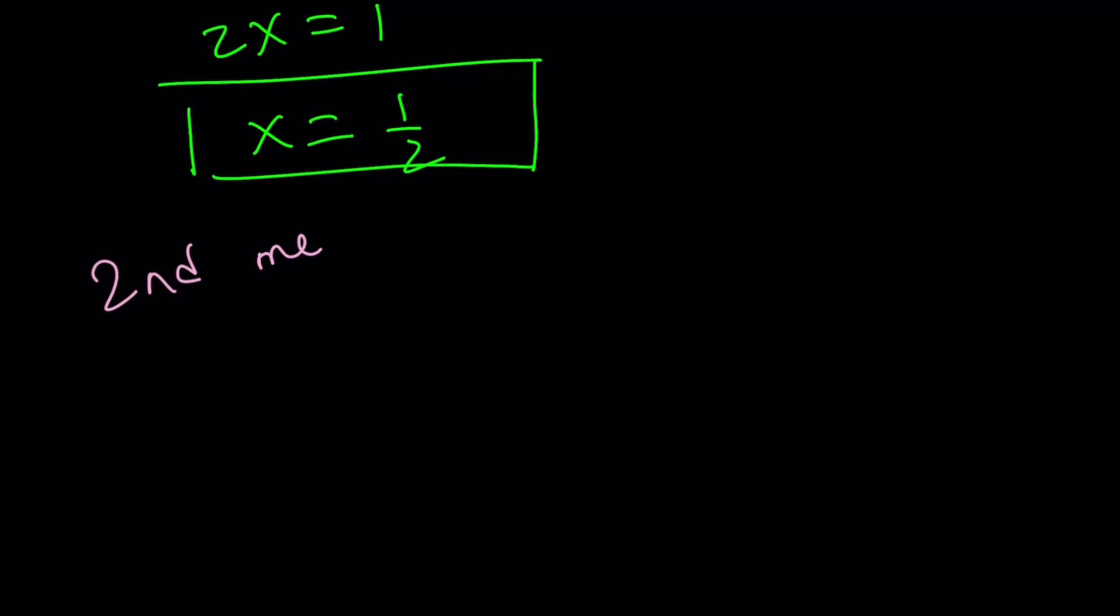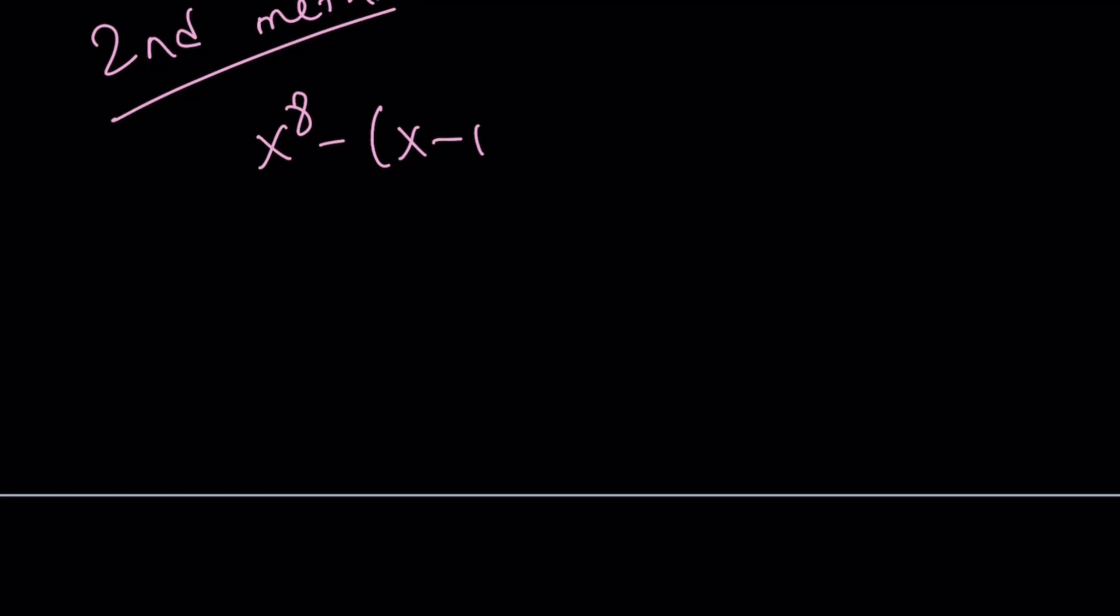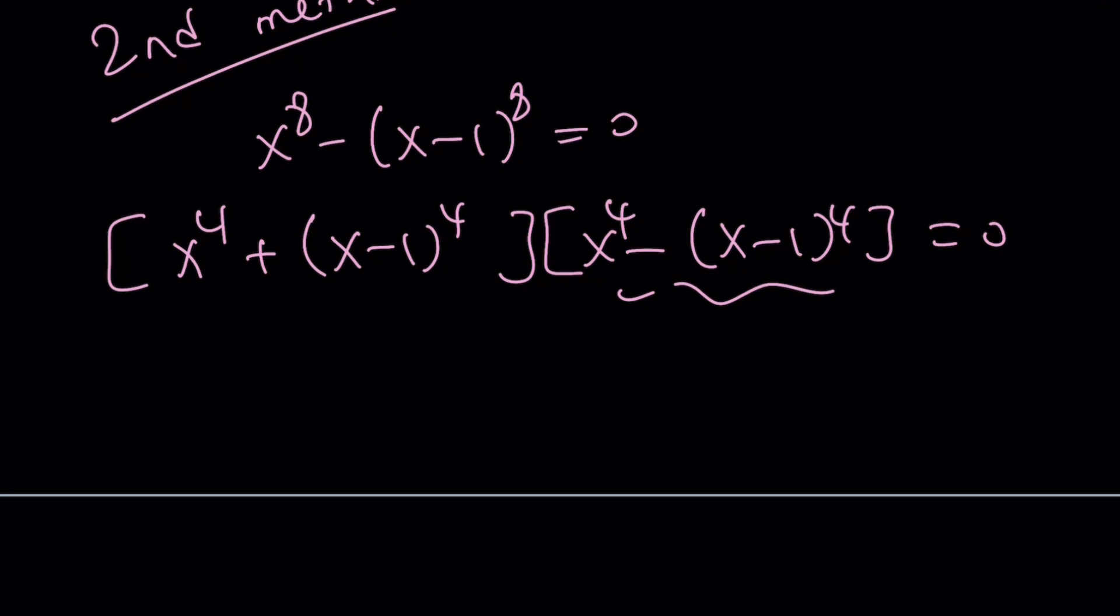Let's talk about the second method now. The second method. I'm going to show you a graph at the end. It's a little different. It's purely algebraic. It doesn't use complex numbers. We can put everything on the same side and then use difference of two squares. So we can factor it as x to the fourth plus x minus 1 to the fourth multiplied by x to the fourth minus x minus 1 to the fourth equals 0. This is another difference of two squares. And this can be factored. I'll talk about that a little later. Let's take care of the difference of two squares first.